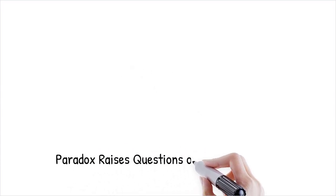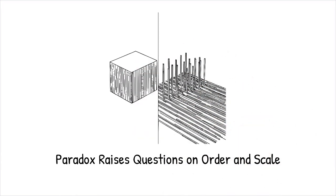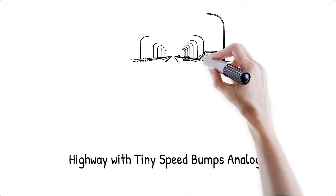This paradox raises deep questions about how order and scale interact in thermal transport. Nanoporous silicon and silicon nanowires can exhibit thermal conductivities 100 times lower than bulk silicon, despite preserving crystalline lattice structure.